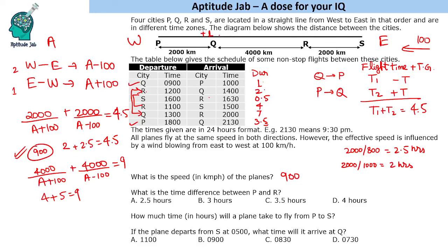For Q to R: actual flight time at 800 km/h over 4000 km is 5 hours, but observed is 7 hours, so R is 2 hours ahead of Q. For R to S: actual flight time is 2000/800 equals 2.5 hours, but observed is 4 hours, so S is 1.5 hours ahead of R. Summary: Q is 1 hour ahead of P, R is 2 hours ahead of Q, S is 1.5 hours ahead of R.